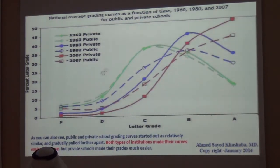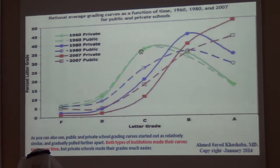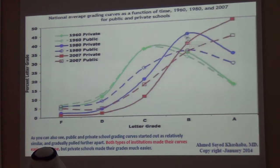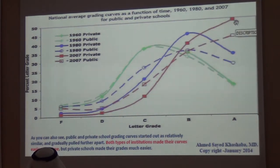This graph also shows the mean grade across the same 200 universities in the USA. The normal mean for any student population was C in the 1960s. It had become B by the 1980s, and by 2007, it had become A.